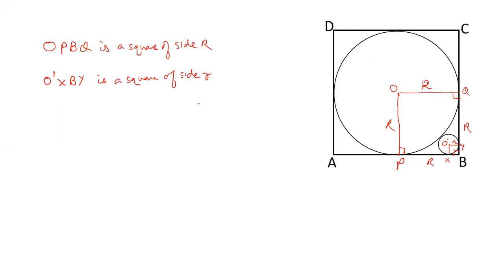Now let us join O and O prime, which passes through the point of contact of the two circles. If we extend this to B, then OB is the diagonal of the larger square and O prime B is the diagonal of the smaller square. The value of OB equals R root 2, and O prime B equals r root 2, because the diagonal of a square is side times root 2.